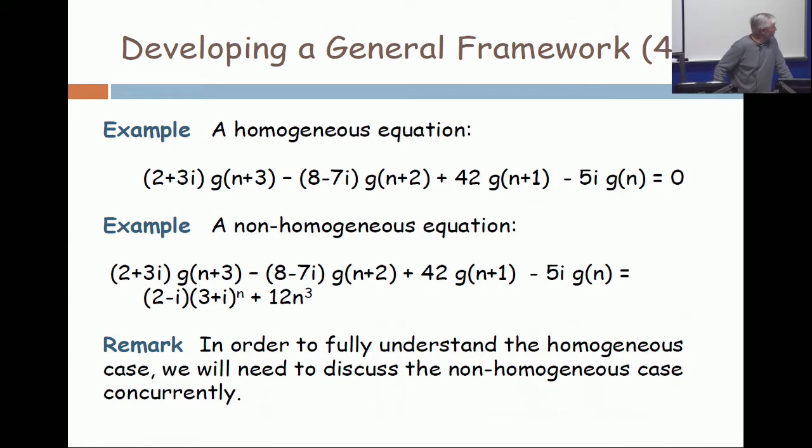The first one is homogeneous because all the g terms are on the left, and on the right, zero.